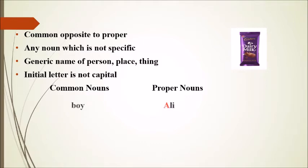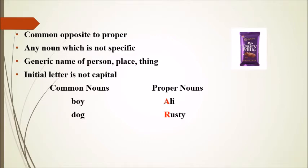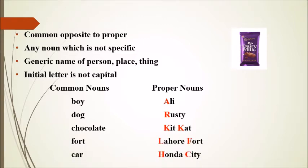Look at these two columns: common nouns and proper nouns. Boy is a common noun; when given the name Ali, it becomes a proper noun. In the same way, dog, chocolate, fort, and car are common nouns, but when given names they become proper nouns and their first letter is capital.